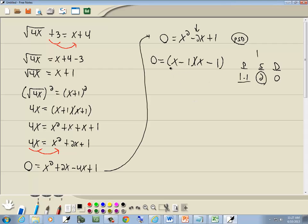Now the zero factor property. Since we've got 0 on one side and we've factored the other side, we can set each factor equal to 0. Since these are the same, all we have to do is set one of them equal to 0. So I'll set x minus 1 equal to 0 and solve, and we get x equals 1, maybe.